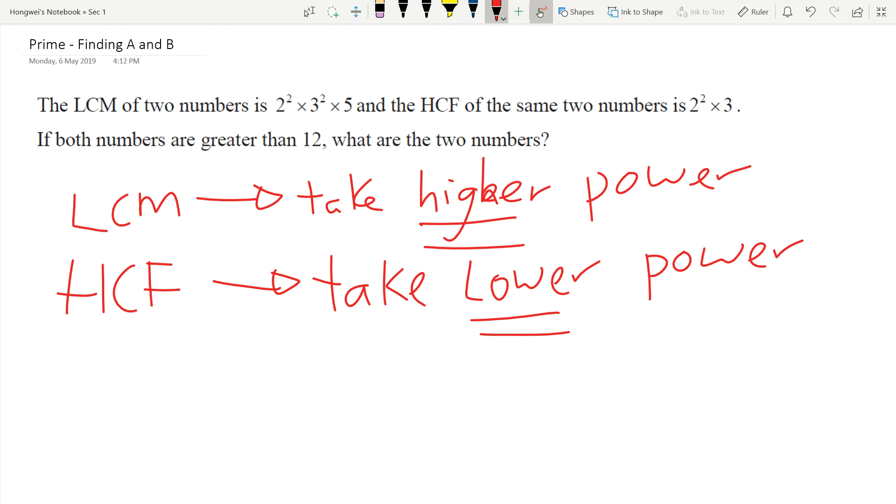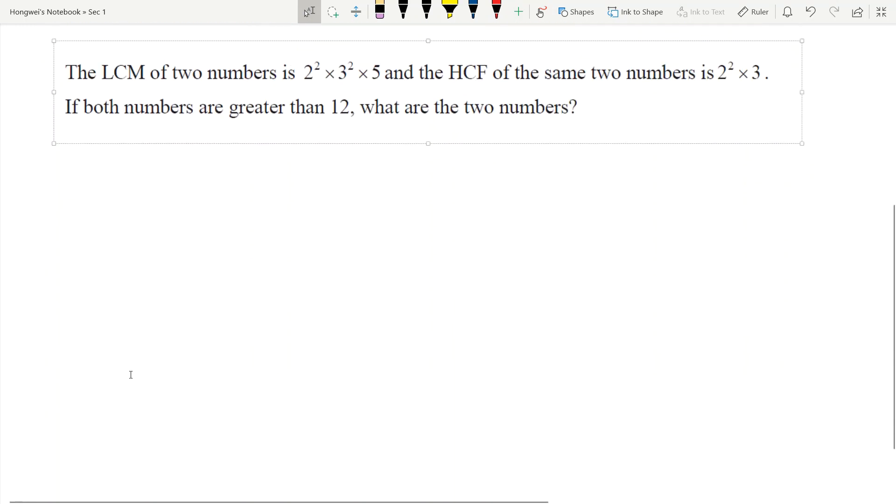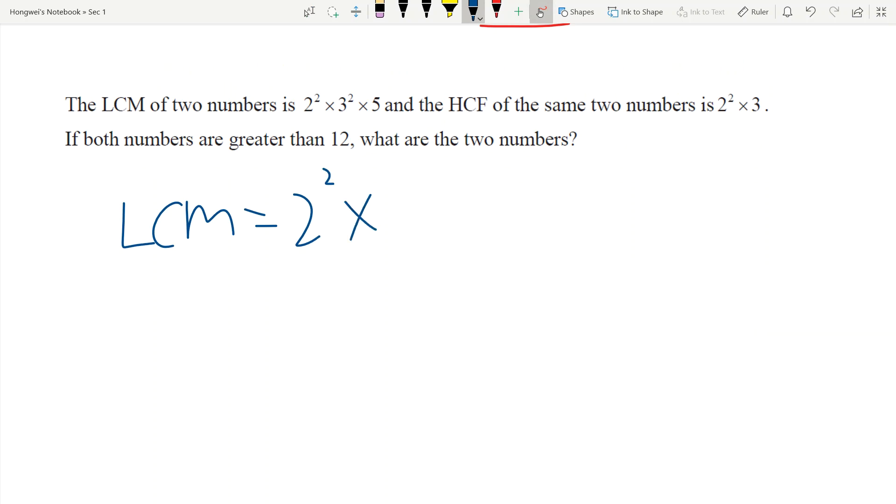Right now, the question is telling you that the LCM of the two numbers are... So for me, I will write down the question first. LCM is equal to 2² × 3² × 5.